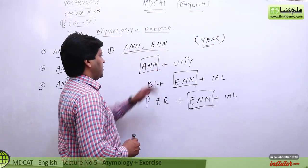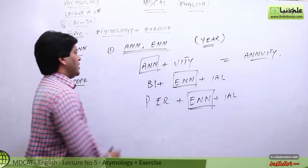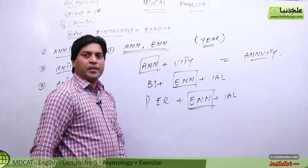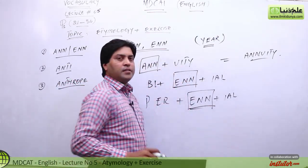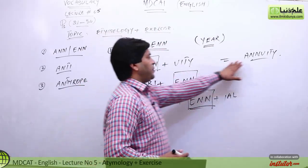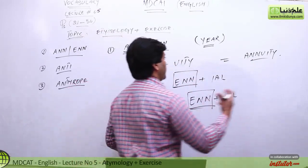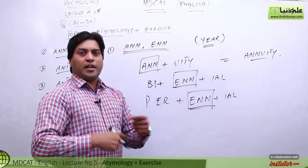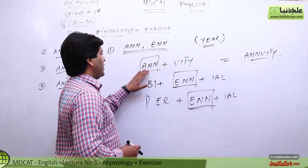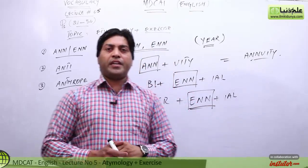Example: annuity. Ab yeh word dekhiye — annuity. Separate kiya: ANN + UITY. Annuity means yearly remittance — is lafz ka matlab hai yearly remittance. Remit, katoti ko kehte hain; remittance — yearly remittance, yani salana katoti. Easy word — annuity. ANN is used in the sense of year, lehaza annuity mein ANN ki wajah se meaning hai yearly remittance.